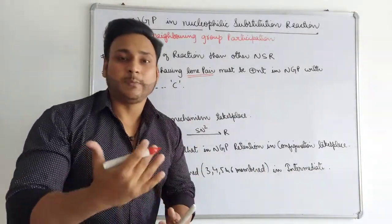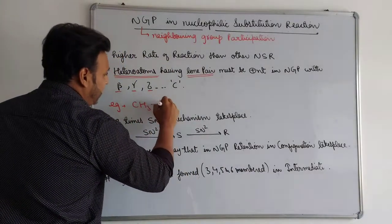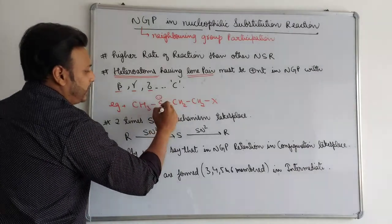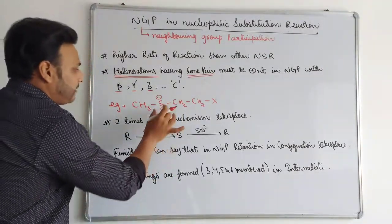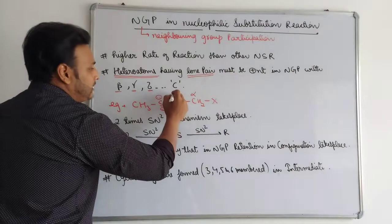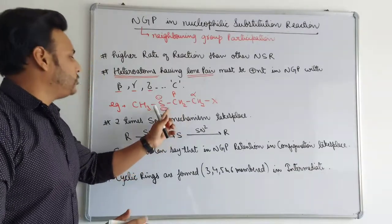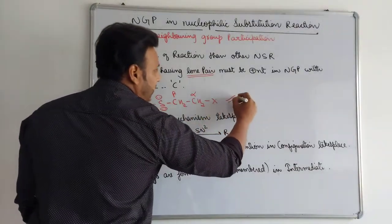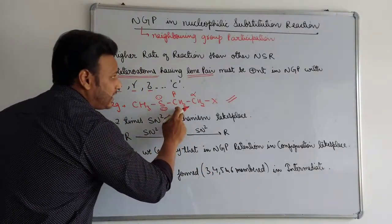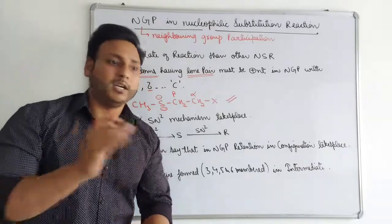If we have a sulfur heteroatom with a lone pair, and the leaving group is at the alpha-position while sulfur is at the beta-position — that means sulfur is linked with the beta-carbon — then this will show NGP, meaning this will be a neighboring group participation. The reaction rate will be higher compared to a normal nucleophilic substitution reaction.